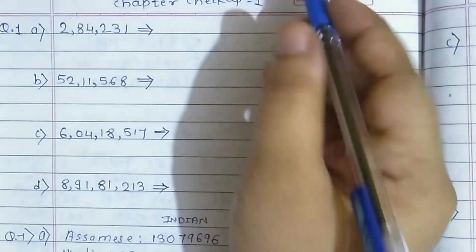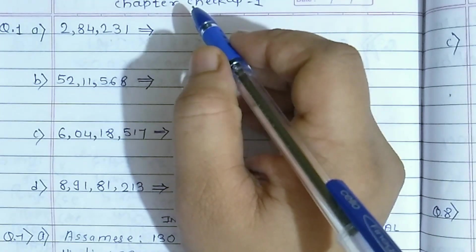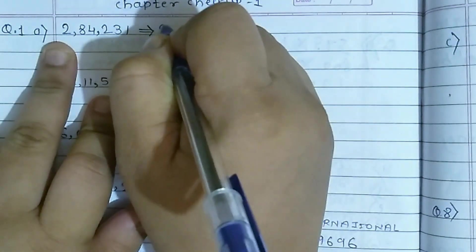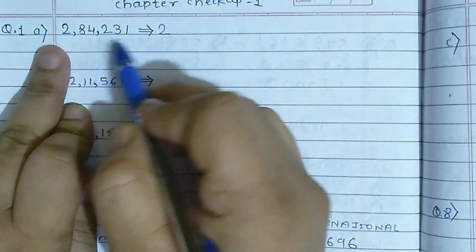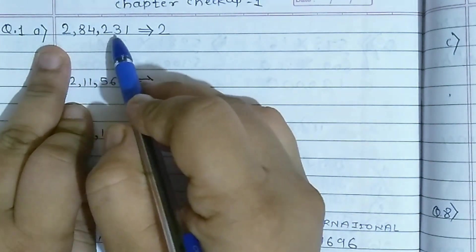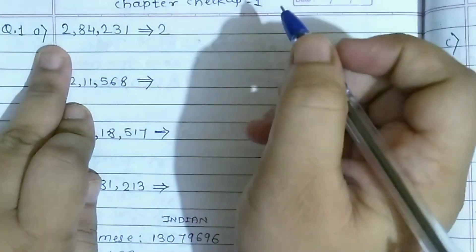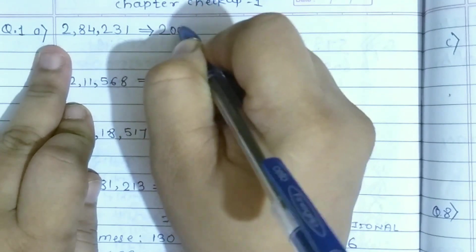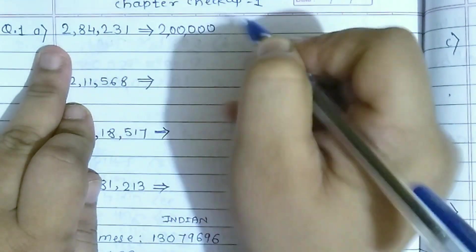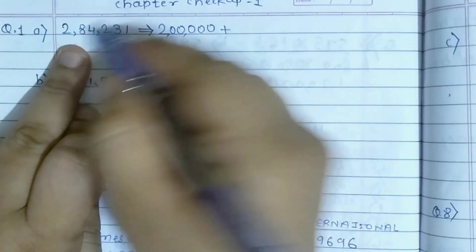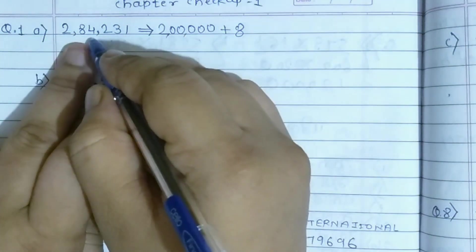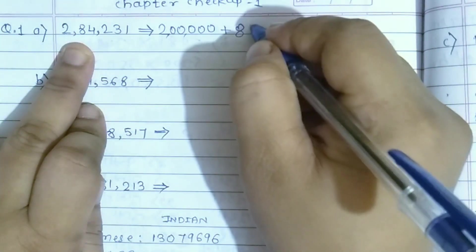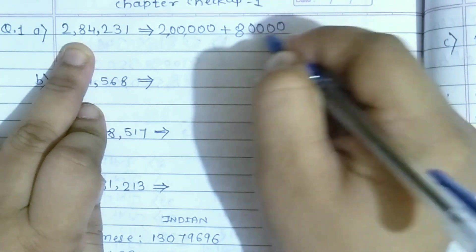So we will do this example in our notebook. How to write this in expanded notation? Start with the first number, write 2, then count the next digits: 1, 2, 3, 4, 5. Five digits are there, so put 5 zeros: 1, 2, 3, 4, 5.